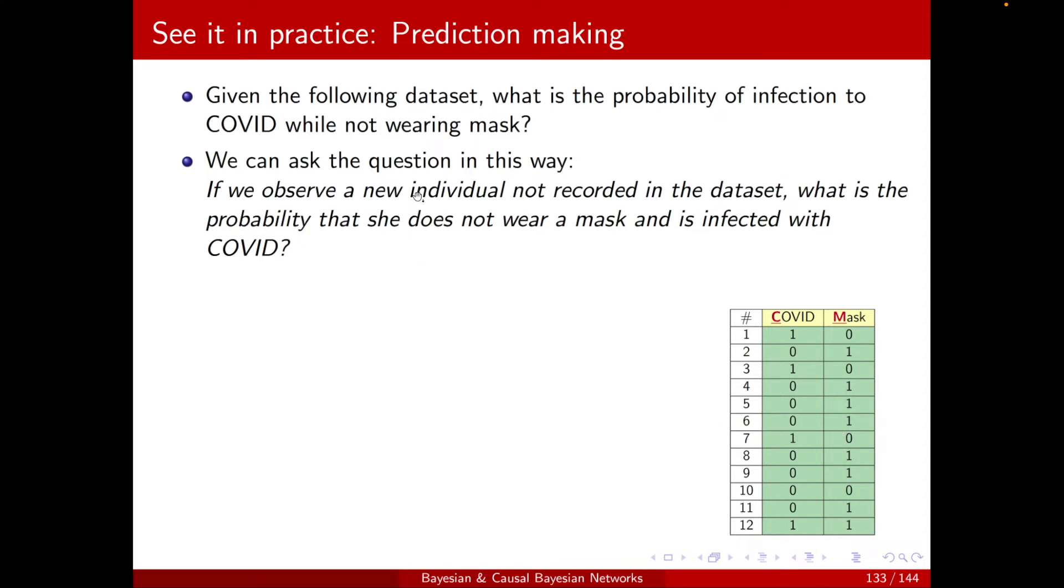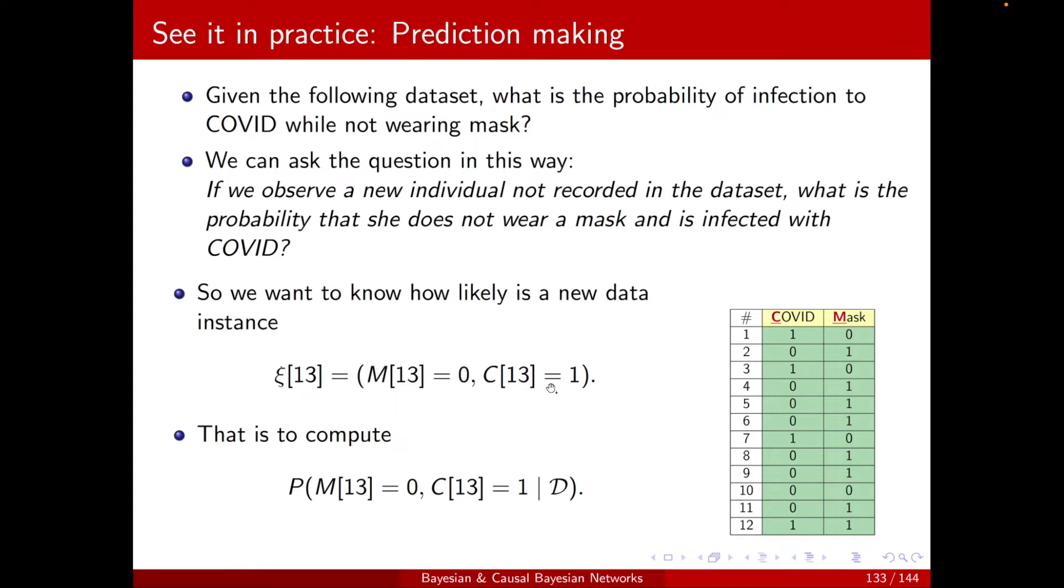I'm emphasizing on a new individual because if we knew that the individual is already in the dataset, then we didn't need to go into the difficulty. The answer was just there in the dataset. So looking at the query in this way, it's basically the same as wanting to know what is the likelihood of a new data instance, xi of 13, being equal to this case: m equal to 0, c equal to 1. So I basically want to calculate the probability of this new data instance given this dataset that I had. This is known as prediction making.